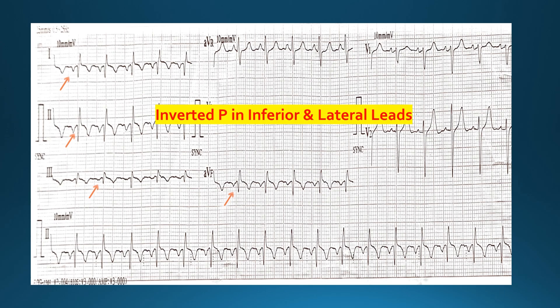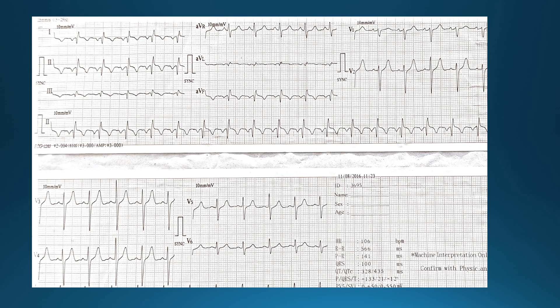Before reaching a conclusion for all these findings, let us look at the chest leads as well. Looking at the chest leads, we can see that there is a good, healthy progression of the R waves and there are no abnormal findings of any note. This means that the majority of the findings lie over the limb leads.